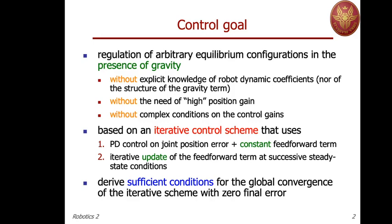The goal is to verify if we can find sufficient conditions that guarantee a global property to this iterative scheme — convergence to the desired state with zero final error, both in position and velocity. The velocity for regulation tasks should be zero at destination, so this is not our main problem.